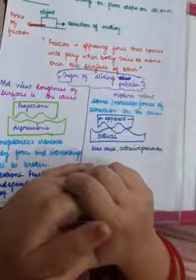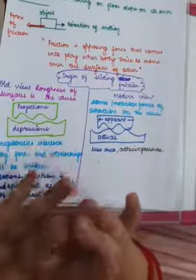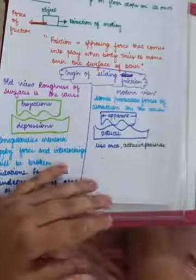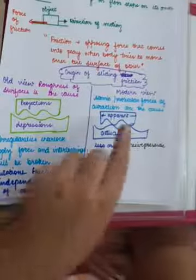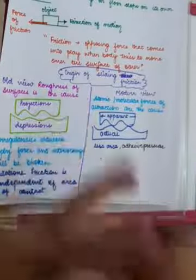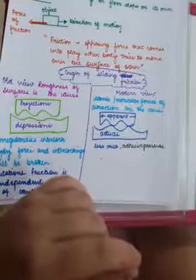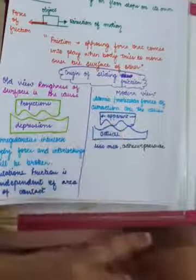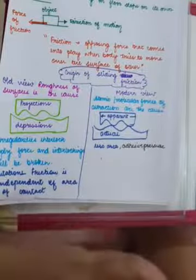With the help of this modern view of friction, we can solve the limitations of the old view. The area of contact is independent of friction. Why? Because if you increase area of contact, the points increase but pressure equals force upon area. So if you increase area of contact, the pressure will not change. And this pressure, which is known as adhesive pressure, that pressure only decides the friction.